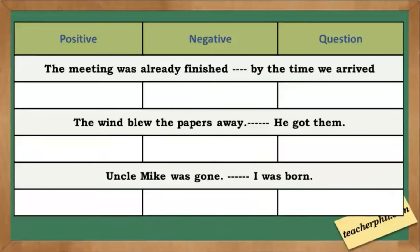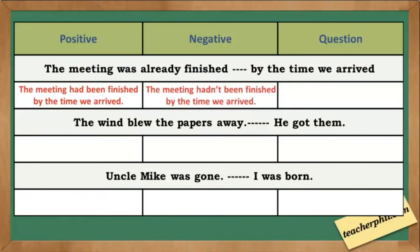Next: The meeting was already finished and by the time we arrived. The correct positive statement is: The meeting had been finished by the time we arrived. Negative sentence: The meeting hadn't been finished by the time we arrived. And the question: Had the meeting been finished by the time we arrived?